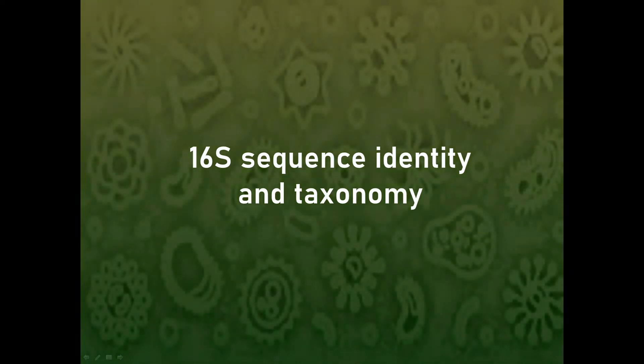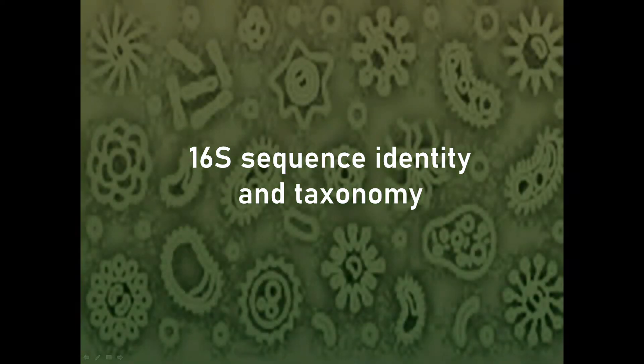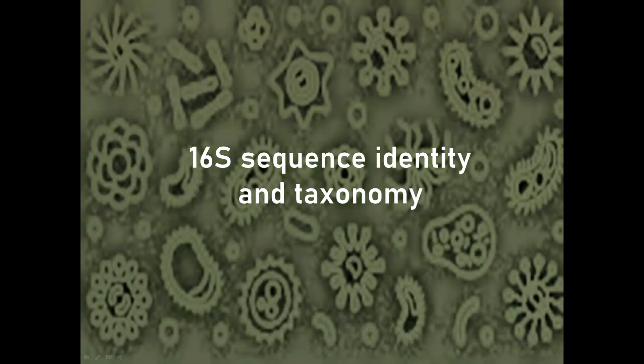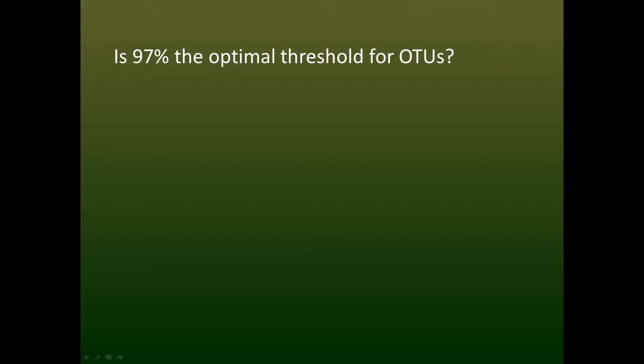Let's talk about the relationship between 16S sequence identity and taxonomy. I'm going to consider the question of whether the standard threshold of 97% is optimal for creating OTUs.